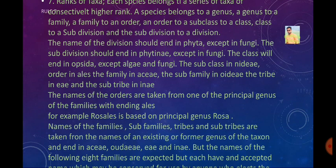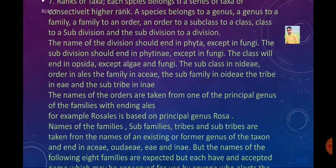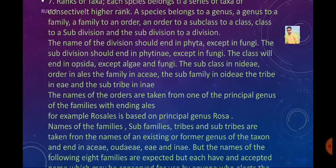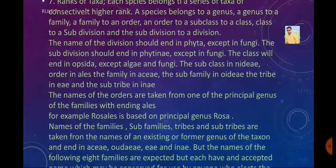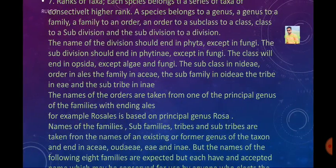The names of orders are taken from one of the principal genera of the family with the ending -ales; for example, from the genus Rosa we get Rosales. Similarly, family and subfamily names are formed from the genus name with the appropriate ending. However, the following 8 families have accepted alternative names which may be conserved for use by anyone who elects them, with alternative names ending in -aceae.